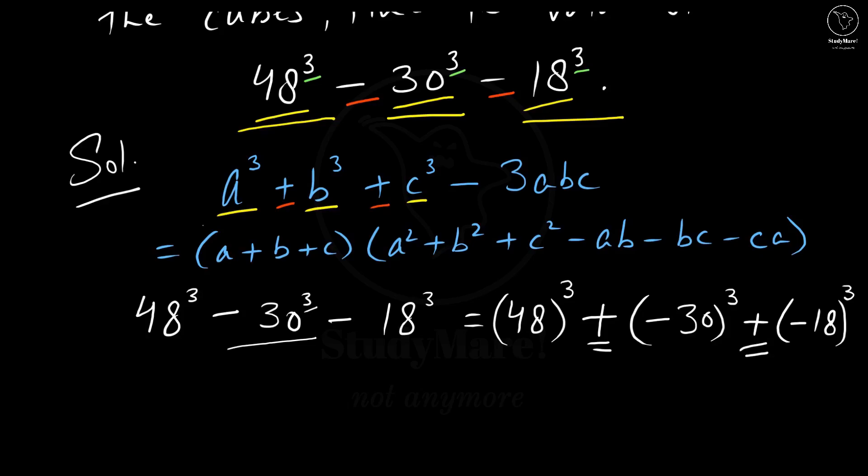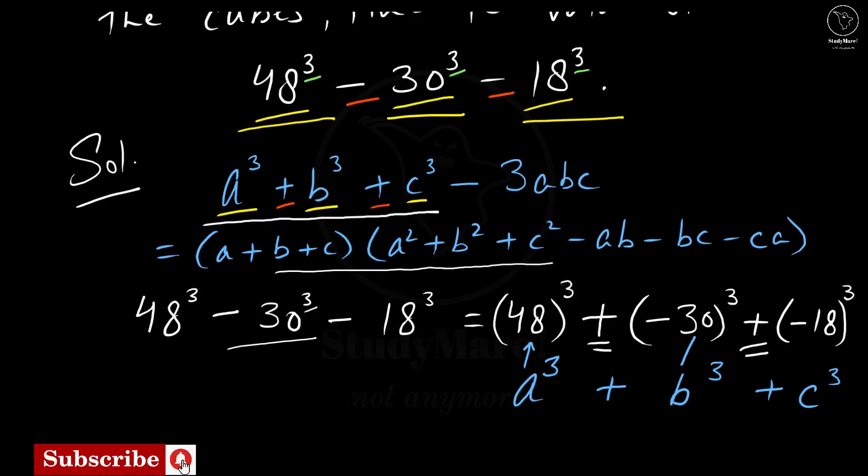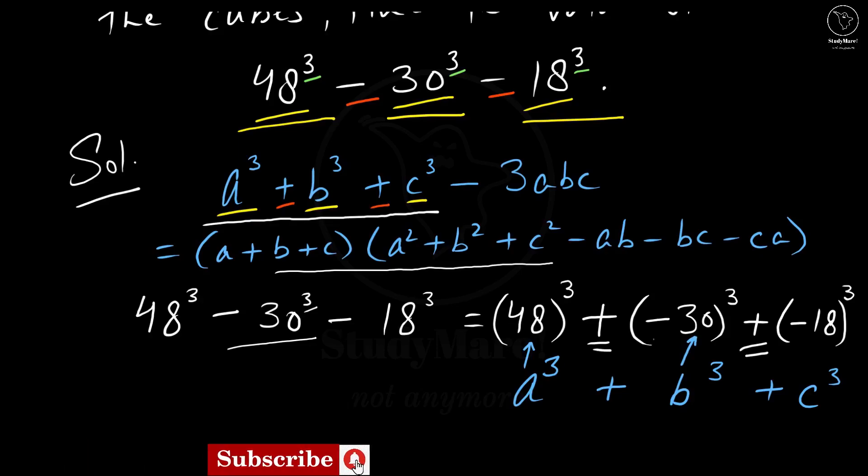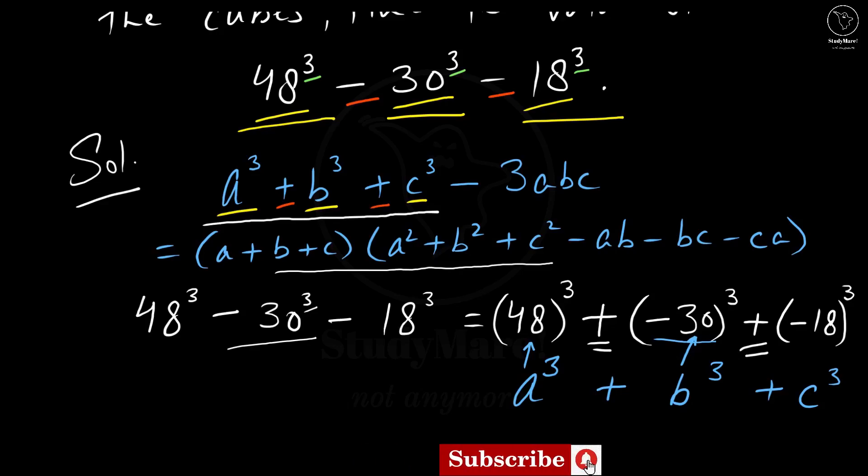So now it is similar to this one. Although looking at this expression, you can see it is still very complex and if we have to do so much of multiplication and subtraction, then there is no use of using the identity. Do you observe anything else? First of all, let's write it like this: a³ + b³ + c³. What is a here? 48. What is b here? No, it is minus 30, because b is the entire thing that is inside the bracket. Same way, c is minus 18.